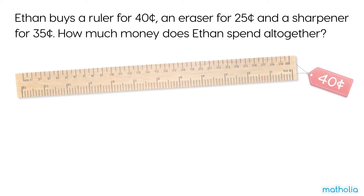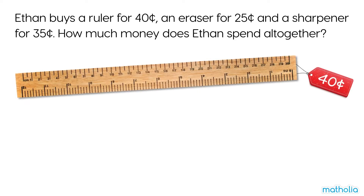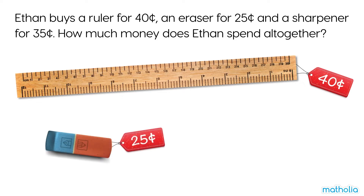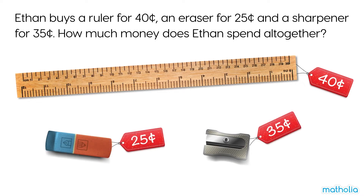Ethan buys a ruler for 40 cents, an eraser for 25 cents, and a sharpener for 35 cents. How much money does Ethan spend altogether?